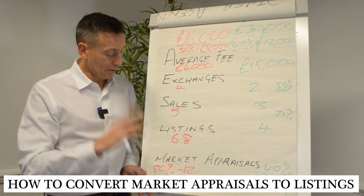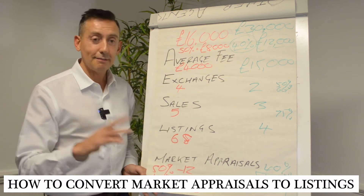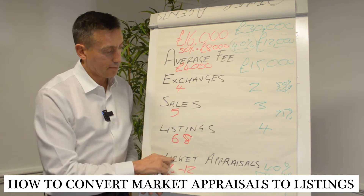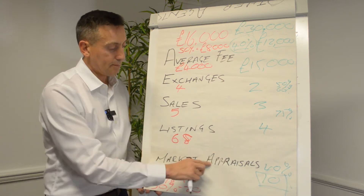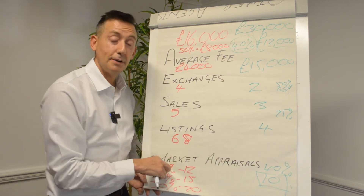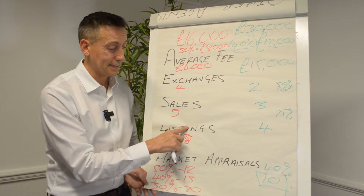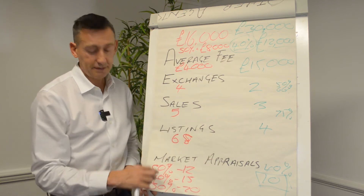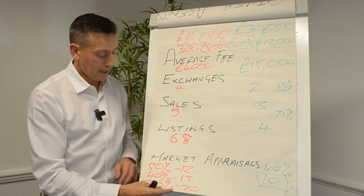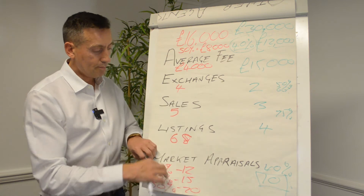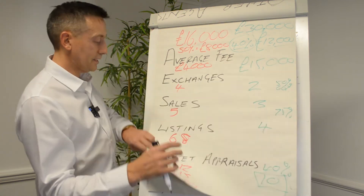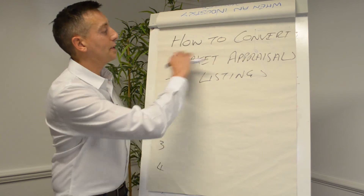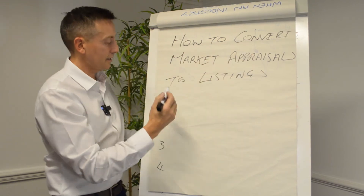Welcome back. We're on the business planning videos. We talked earlier about how to generate market appraisals, but the key is converting those market appraisals into listings. So decide what you want to convert, whether that's 40%, 50%, 30%, whatever it is, but the key is converting them. So we've generated them — how do we convert market appraisals to listings?